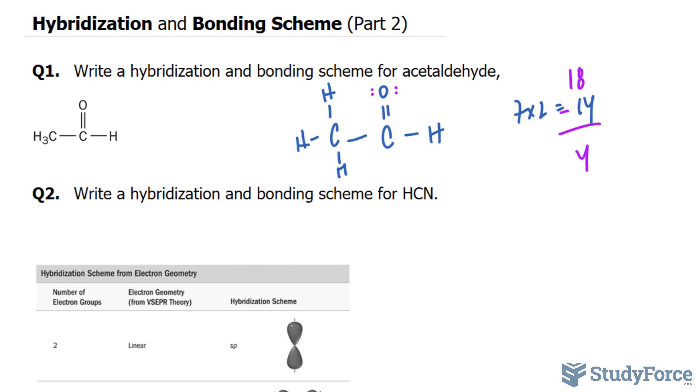We have two central atoms here, this carbon and this carbon. So we need to find out the hybridization scheme for both. Starting with this one, the total number of bonding groups are one, two, three, four, no lone pairs here.